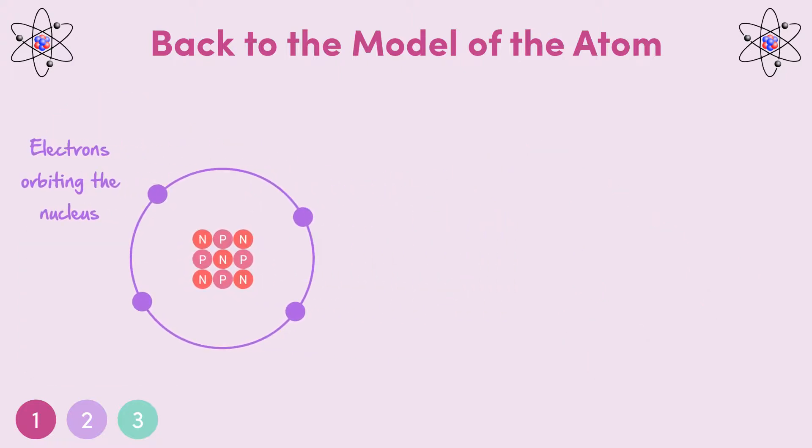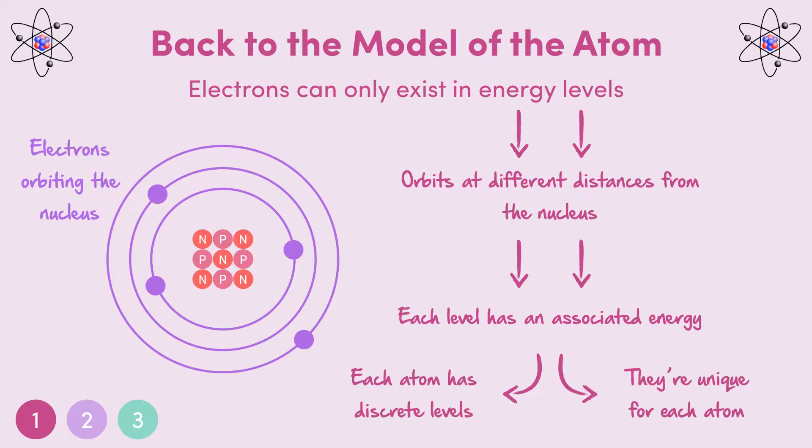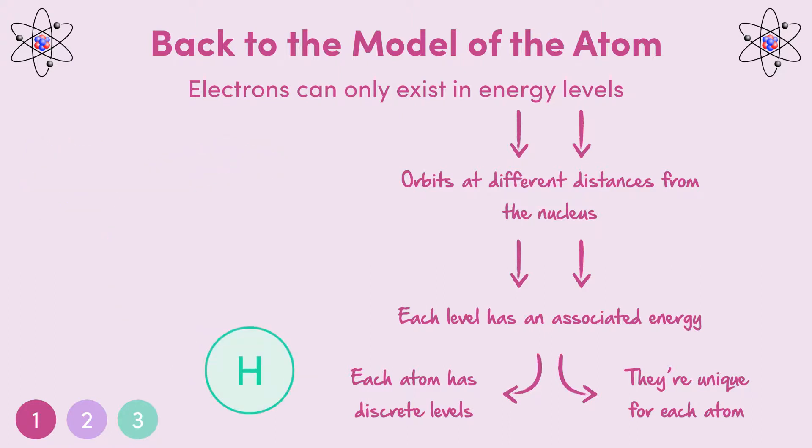Electrons can only exist in things called energy levels. These can be thought of as orbits at different distances from the nucleus, and we call them energy levels because each of them has an associated energy for the electrons in that level. Now, each atom has discrete energy levels, and they're different for every atom. In a hydrogen atom, for example, the lowest energy level, or the n equals 1 state, has an energy of minus 13.6 eV. The second lowest, or n equals 2 state, has an energy of negative 3.4 eV, and so on.